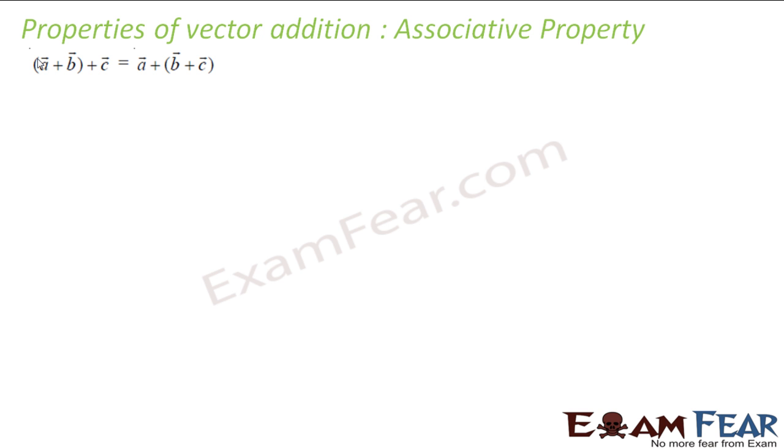In addition to commutative property is the associative property. You say a plus b, then you add c or you say a plus b plus c. Both are same. So it is pretty simple actually. So you have a vector. Let's suppose you have b vector. So you add these two a plus b, you get some vector. On this you are adding c vector. So final vector is this guy, a plus b plus c.